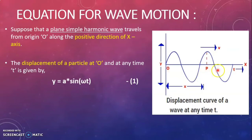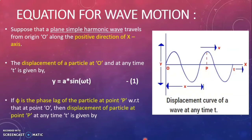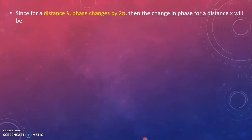Now let us consider another particle P which is at a distance x from the origin. If φ is the phase lag of the particle at point P with respect to that at point O, then the displacement of the particle at point P at any time t is given by y = a sin(ωt − φ).